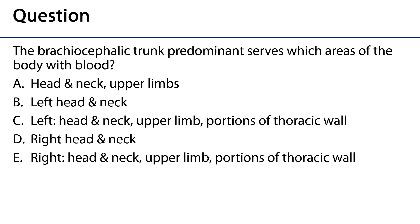The assessment question for this video: the brachiocephalic trunk predominantly serves which areas of the body with blood? A: the head and neck and upper limbs; B: the left head and neck; C: the left head, neck, upper limb, and portions of the thoracic wall; D: the right head and neck; or E: the right head and neck, upper limb, and portions of the thoracic wall. The correct answer is E. The brachiocephalic trunk bifurcates into the right common carotid artery, supplying the right head and neck, and the right subclavian artery, supplying the right upper limb and right portions of the thoracic wall. Thank you very much for your time.